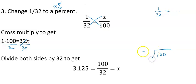100 divided by 32: 32 goes into 100 three times. 32 times 3 is 96. We have 4 remaining, then we add a decimal point and add a 0.